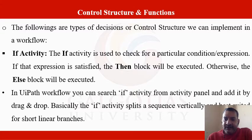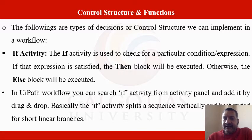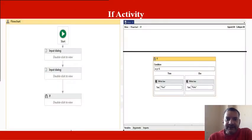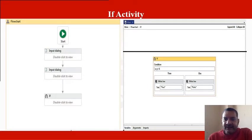In UiPath workflow, you can search for the if activity from the activity panel. You will type 'if' into the search box, find the if activity, and add it by drag and drop. The if activity splits a sequence vertically into short linear branches — the then branch and the else branch — depending on the situation.